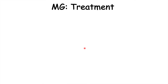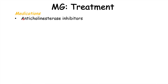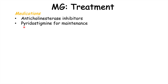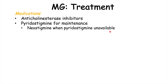Once a clinician has diagnosed myasthenia gravis, medications often used include anticholinesterase inhibitors. Anticholinesterase is an enzyme that breaks down acetylcholine in the synaptic cleft. By using anticholinesterase inhibitor medications, you can stop that breakdown and lead to an increased level of acetylcholine in the synaptic cleft. Pyridostigmine can be used for maintenance, and neostigmine can be used when pyridostigmine is unavailable.